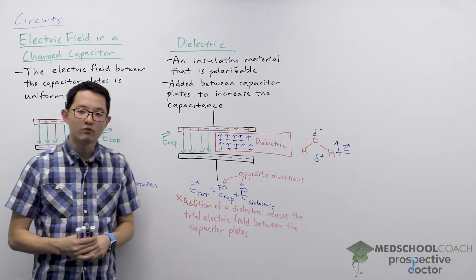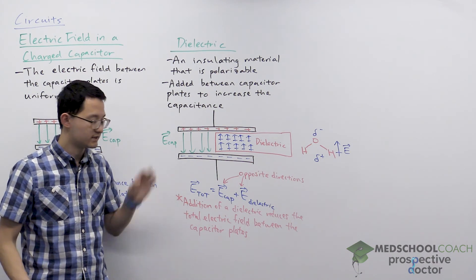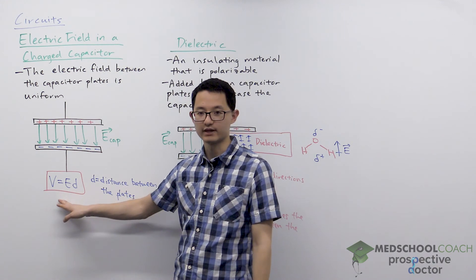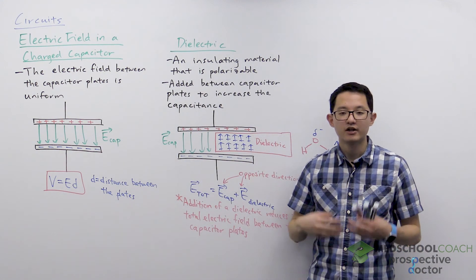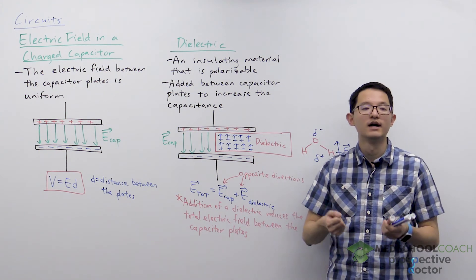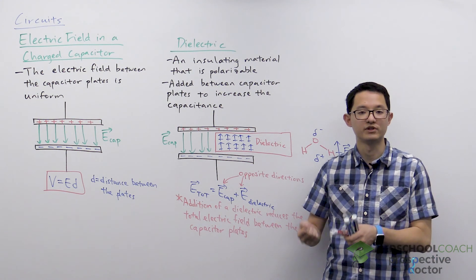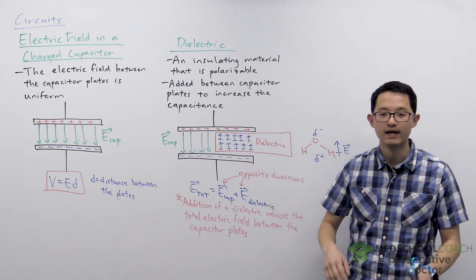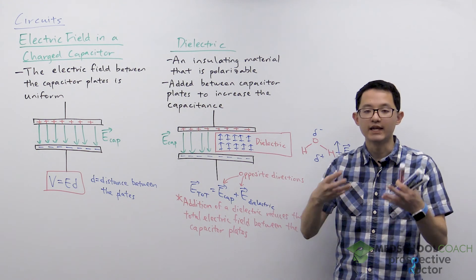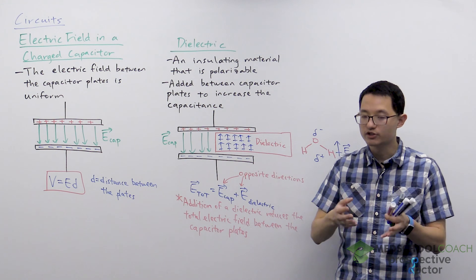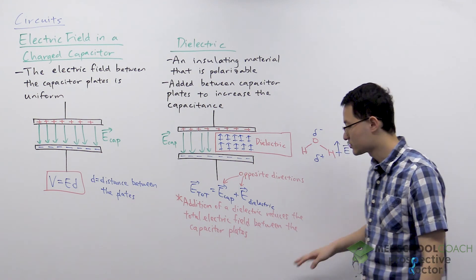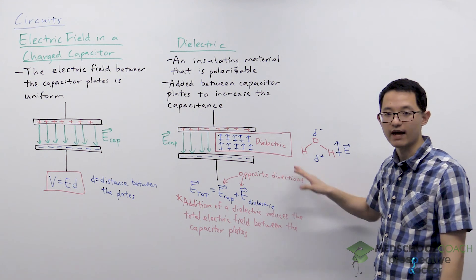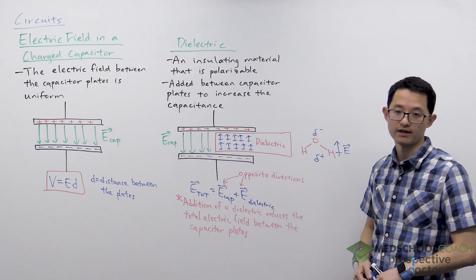What's important about this is that if you weaken the total electric field between the capacitor plates, by the equation V equals ED, that will lower the voltage across the capacitor plates. If you recall from our last video, current flows in the circuit charging up the capacitor until the voltage of the capacitor becomes equal to the voltage of the battery. If you add a dielectric, you lower the electric field and the voltage across the capacitor. This allows current to continue to flow to build up even more charges, allowing you to store more charge for the same voltage. That's why we say that dielectrics increase the capacitance of the capacitor — this is the mechanism by which they achieve that, by lowering the total electric field between the capacitor plates.